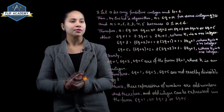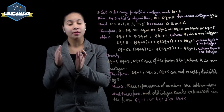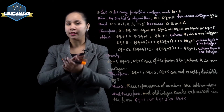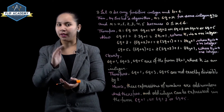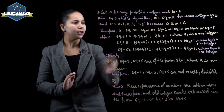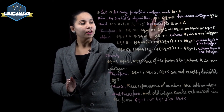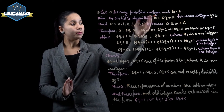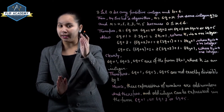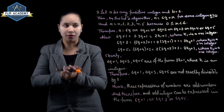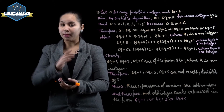Let 'a' be any positive integer and b = 6. By Euclid's algorithm: a = 6q + r, where 'a' is the dividend, 6 is the divisor, q is the quotient, and r is the remainder, for some integer q ≥ 0. The remainder r can take values 0, 1, 2, 3, 4, or 5.